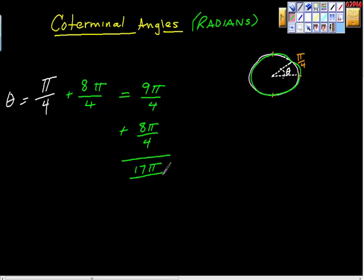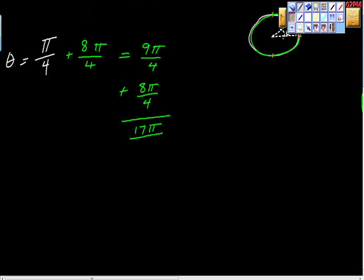Let's try maybe a simpler example and see if that makes more sense to you. What if you did this, what if I started here, what if I said find an angle coterminal to pi halves.